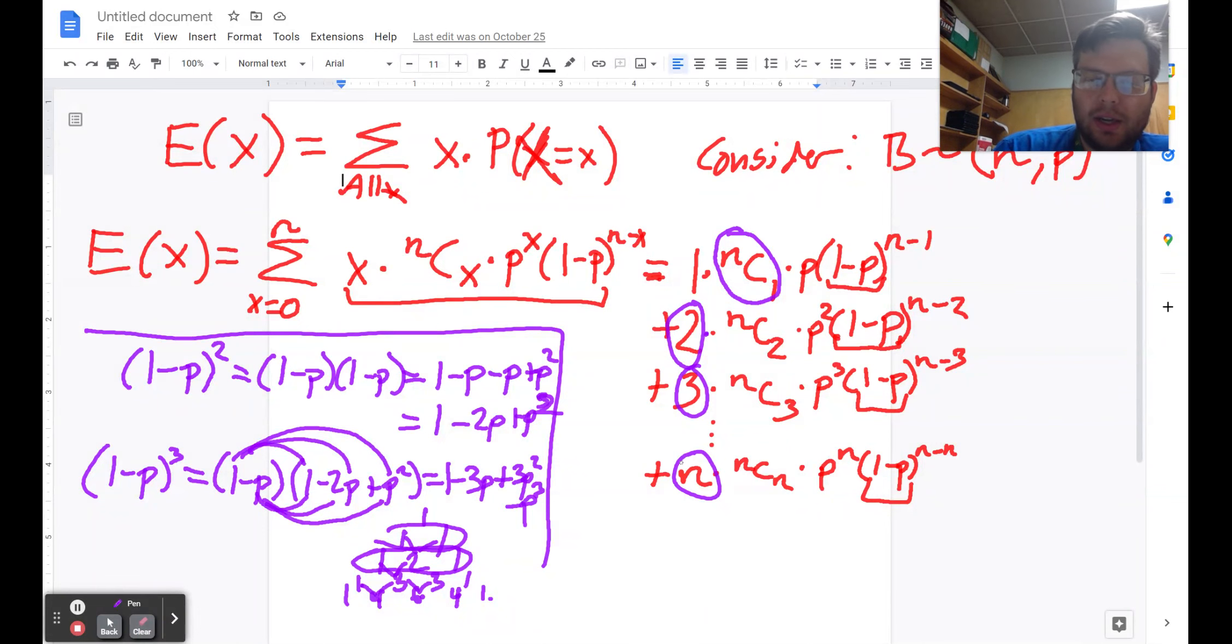So after doing all of that, what you're going to end up with is a lot of terms that are all going to cancel out. So let's see if we can write out what some of the terms look like. So this first one, n choose one, is equal to n. So we have n times p. And then the rest of that all expands out one minus n minus one times p plus a bunch of other stuff.